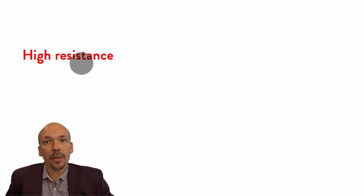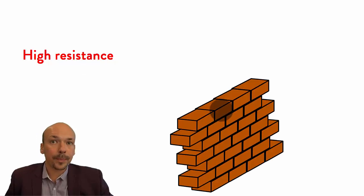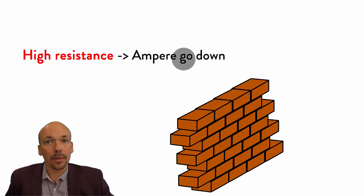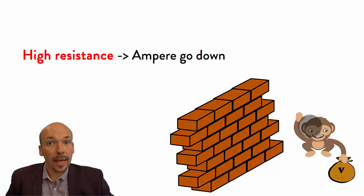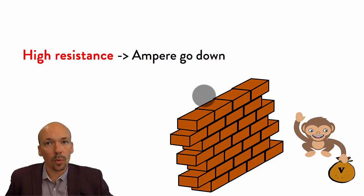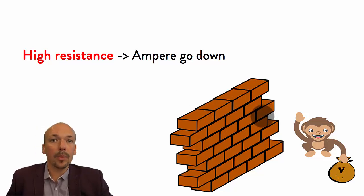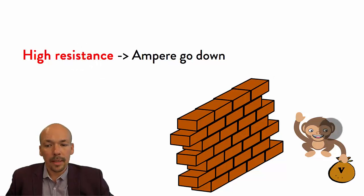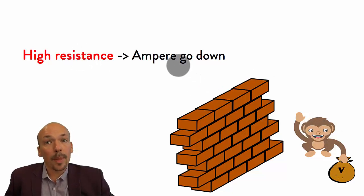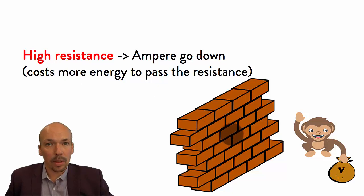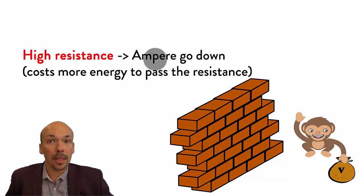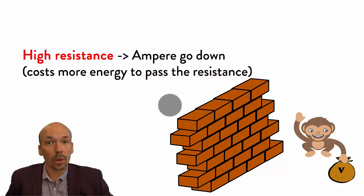To visualize this: if you have a high resistance, picture it as a high wall. The current — I like to use apes as an analogy for ampere — goes down when resistance is high. Imagine the amps have to climb over this wall. If it's a high wall, it takes a lot of energy and slows them down. So with high resistance, the current is slowed down, the ampere goes down, and it costs more energy to pass through the resistance.